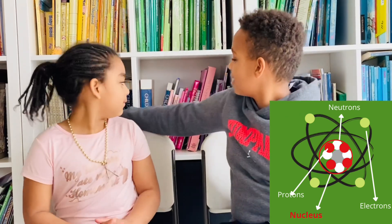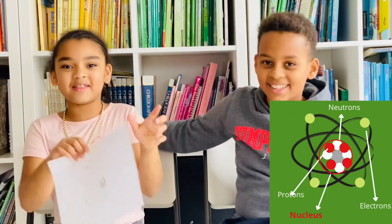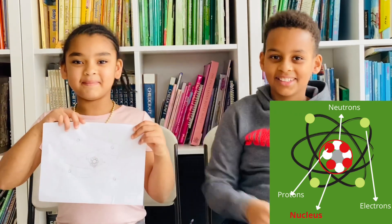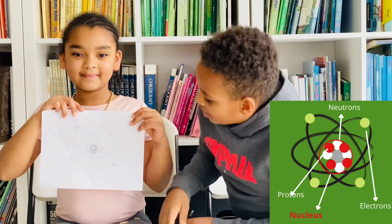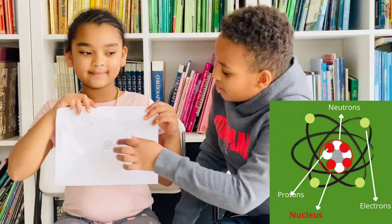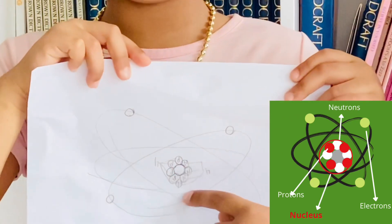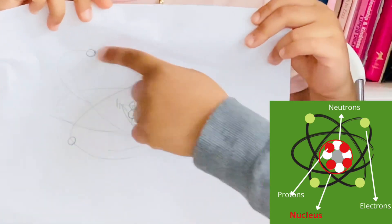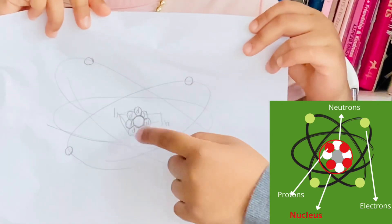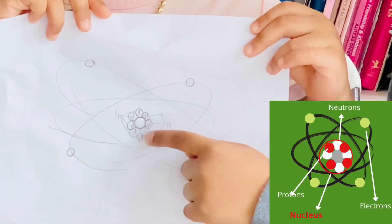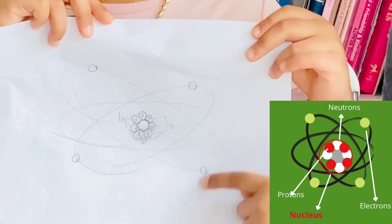This is a picture of the atom. As you can see, we have the nucleus, and the electron cloud, the protons and neutrons, and then the electrons.